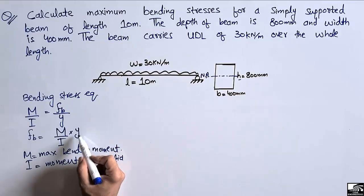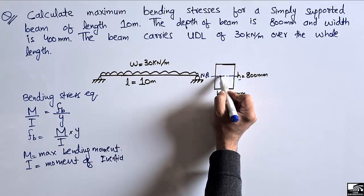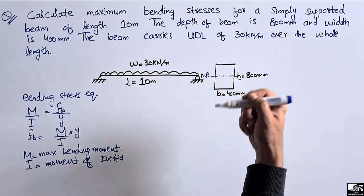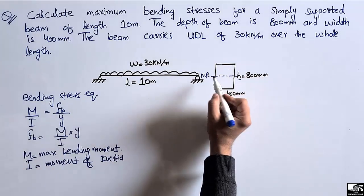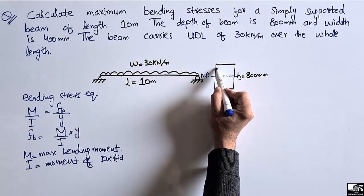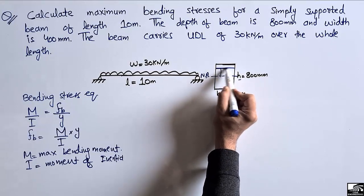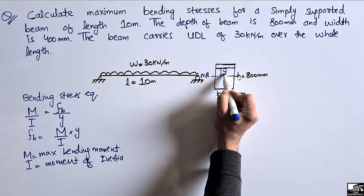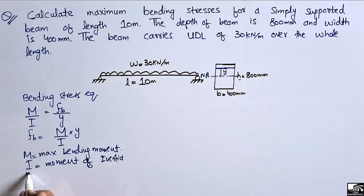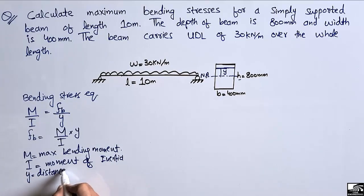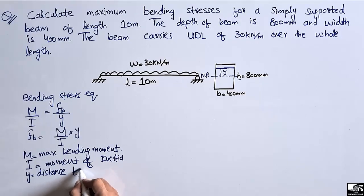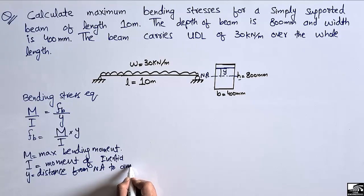And y is the distance from the neutral axis of the beam to the point where you want to find out the stresses. For example, if we want to find the stresses at any point, y is the distance from the neutral axis to that point.